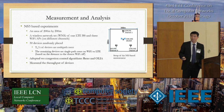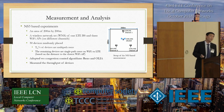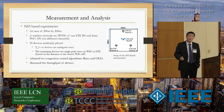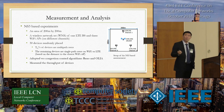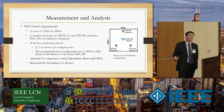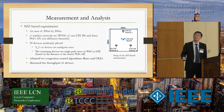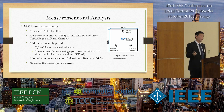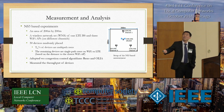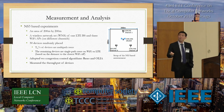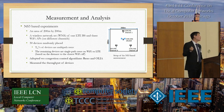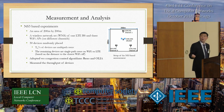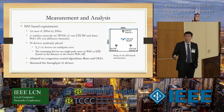We conducted NS3-based experiments for scale. We simulated an area of 200 by 200 meters with one LTE base station and three Wi-Fi access points deployed over different channels for interference consideration. We have 30 devices randomly placed in this area, and we randomly pick a percentage of them to be multipath users. The remaining devices are single-path users. We tested with two different congestion control algorithms: one is standard TCP congestion control, and the other, OLIA, is one developed specifically for MPTCP.